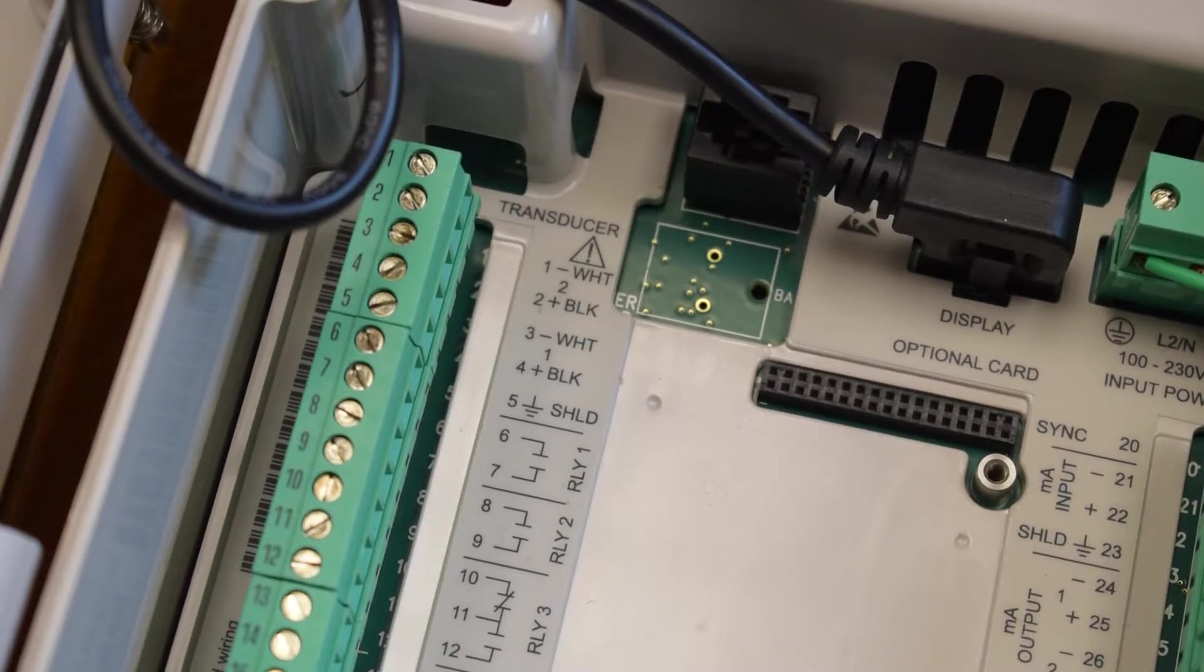Located to the left is the terminal block where the transducer should be landed. The number marked between black and white markings denote the transducer. Transducer 2, which is the downstream transducer, will be wired first to terminals 1 and 2. Match the white and black wires as shown.